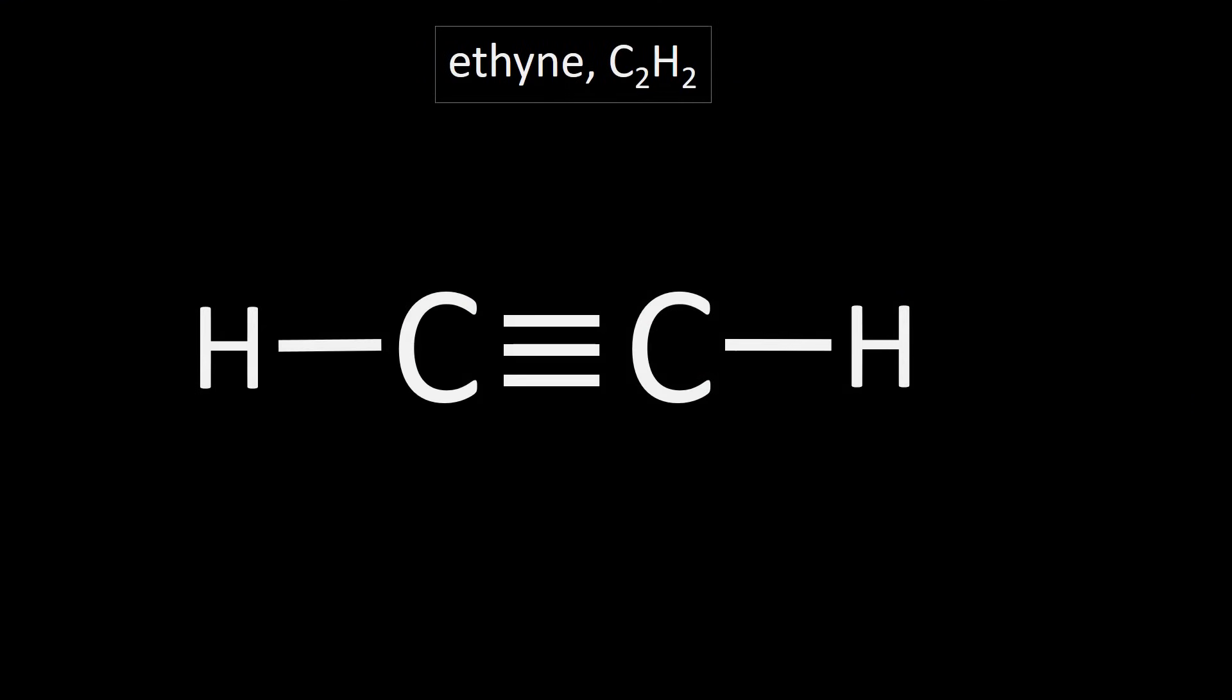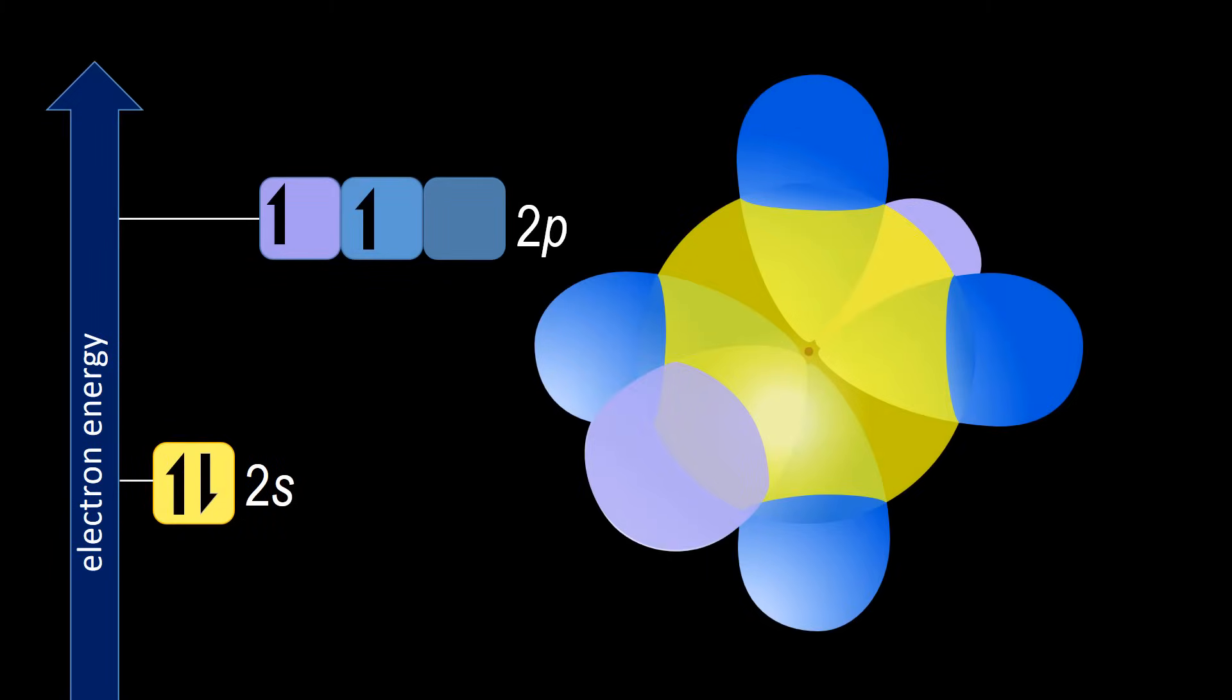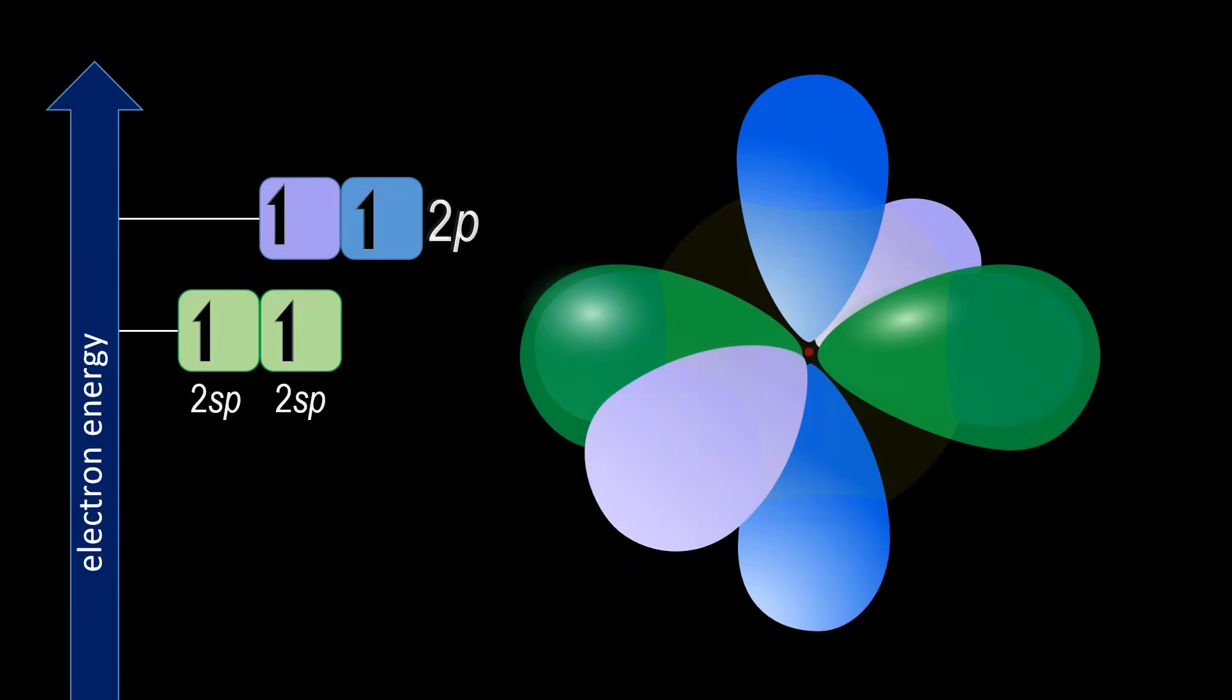Now let's look at how hybridization can be a model for the triple bond using ethyne C2H2. The carbon-hydrogen bonds are sigma bonds and the triple bond is one sigma bond and two pi bonds. Let's see how hybridization can accommodate this. Since pi bonds come from p orbitals and we need two pi bonds, then two 2p orbitals have to remain unhybridized and so the remaining single 2s orbital and a single 2p orbital will hybridize to two 2sp hybrid orbitals.